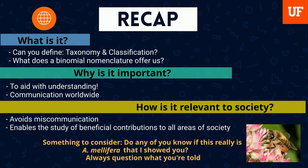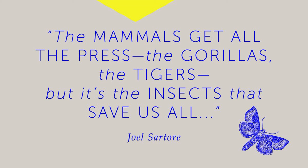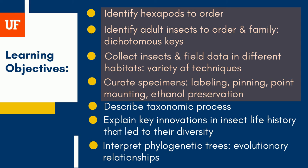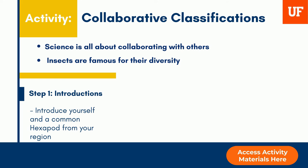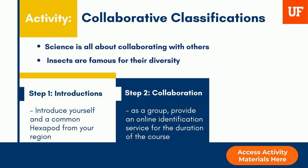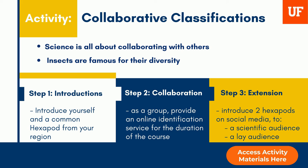The goal of this course is to provide you with a sound theoretical and practical understanding of insect diversity and the practice of classifying organisms. I hope you enjoy the course as much as I've enjoyed making it. The following activity will focus on these learning objectives. Your first activity is collaborative classification. I'd like you to use the discussion board to introduce yourself and a common hexapod from your region. Next, you will need to work as a team to produce an online identification service for the duration of the course. Finally, you'll individually introduce two hexapods of your choosing to a scientific and lay audience on social media.